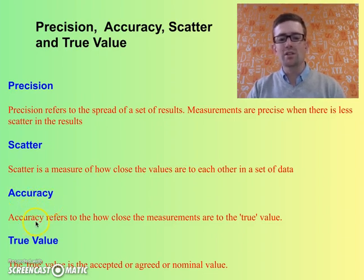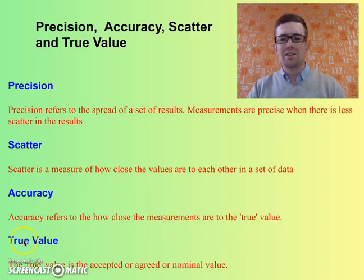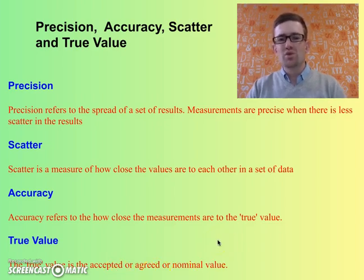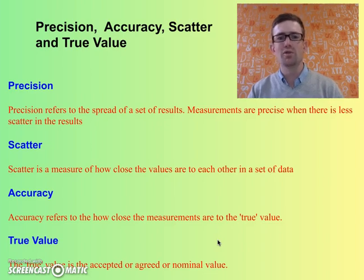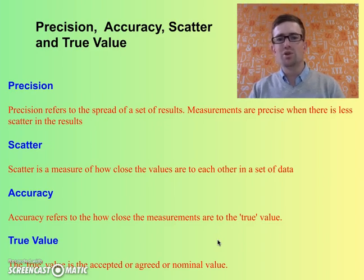Accuracy is a bit different. Accuracy refers to how close the measurements are to the true value. The true value is the accepted, agreed, or nominal value — basically what the actual value is or what it should be. For example, the boiling point of water is 100 degrees Celsius. That is the true value. But if you were to do an experiment and measure the temperature at which water boils, you may not get that value, for a range of reasons.